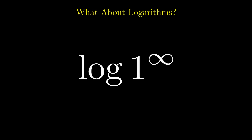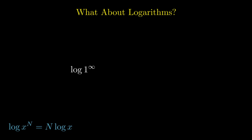Another approach to dealing with this issue is by using logarithms. Logarithms are the inverse of exponents, and we can often use them to deal with exponents. In particular, this property of logarithms is often used to turn exponential expressions into linear expressions, which are easier to deal with. So maybe we can try this with 1 to the infinity. Completely glossing over the fact that this doesn't work if the exponent is infinity, we run into a different problem: even if we could drop this infinity power down, the logarithm of 1 is 0, and we have infinity times 0.